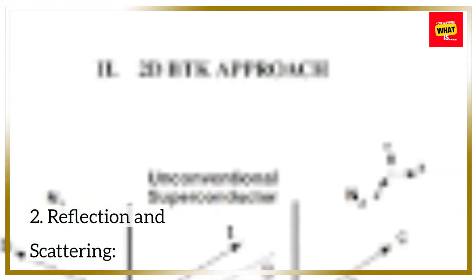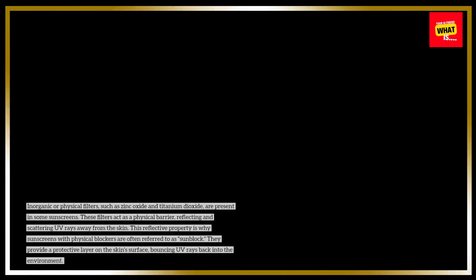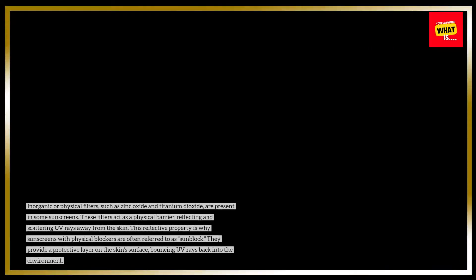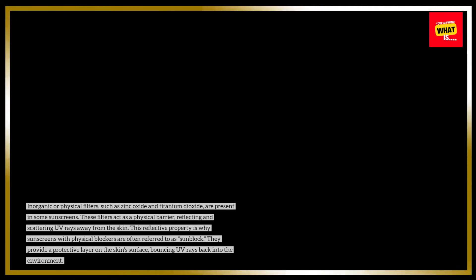2. Reflection and Scattering: Inorganic or physical filters, such as zinc oxide and titanium dioxide, are present in some sunscreens. These filters act as a physical barrier, reflecting and scattering UV rays away from the skin. This reflective property is why sunscreens with physical blockers are often referred to as sunblock. They provide a protective layer on the skin's surface, bouncing UV rays back into the environment.